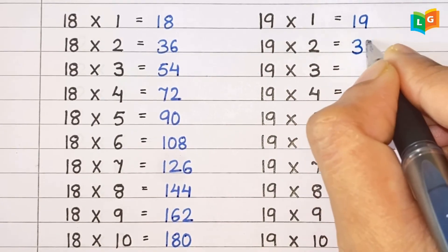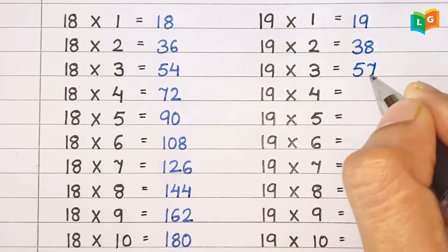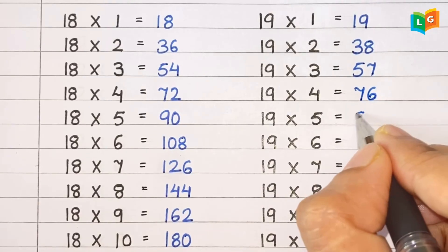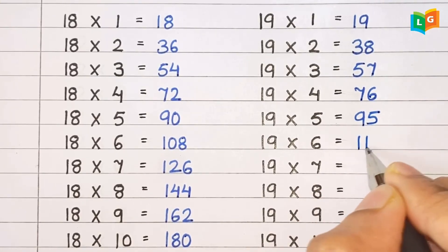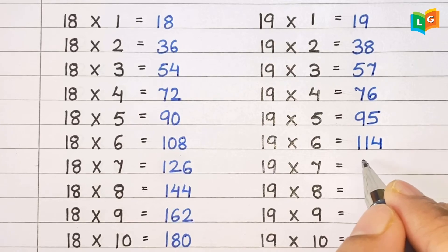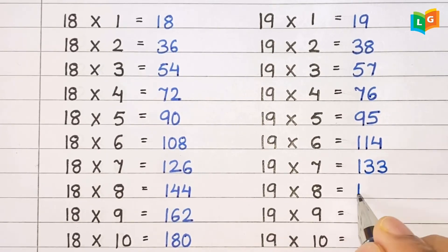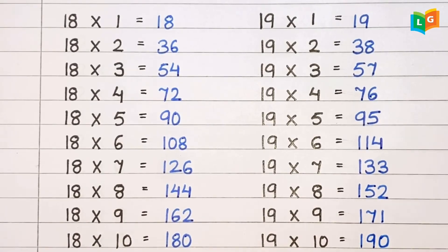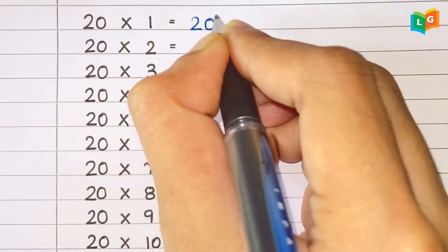Now let's see table of 19. 19 1s are 19, 19 2s are 38, 19 3s are 57, 19 4s are 76, 19 5s are 95, 19 6s are 114, 19 7s are 133, 19 8s are 152, 19 9s are 171, 19 10s are 190.